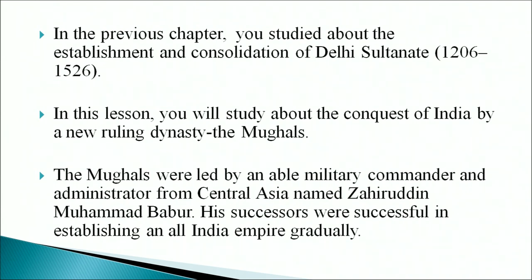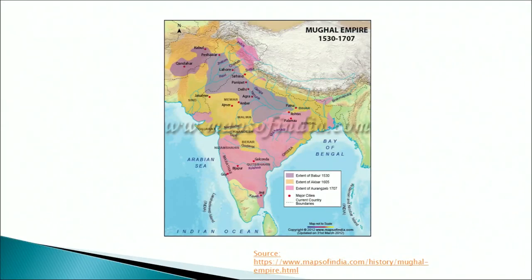The Delhi Sultanate lasted from 1206 to 1526. In this lesson you will study about the conquest of India by a new ruling dynasty — the Mughals. The Mughals were led by an able military commander and administrator from Central Asia named Zahiruddin Muhammad Babur. His successors were successful in establishing an all-India empire gradually. The map shows the extent of the Mughal Empire.